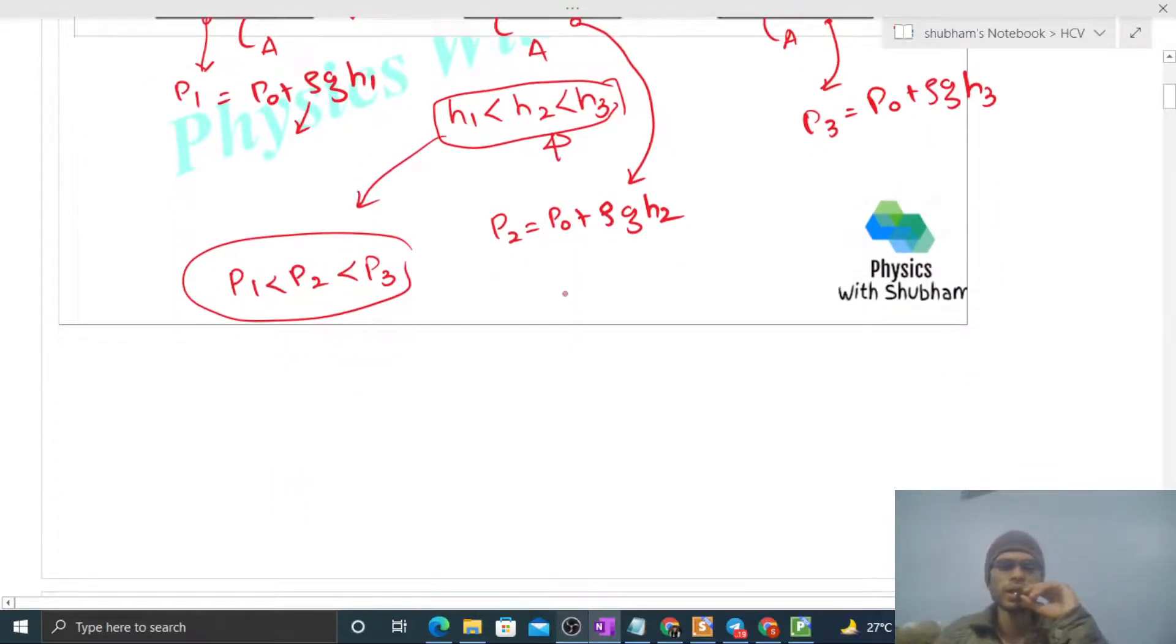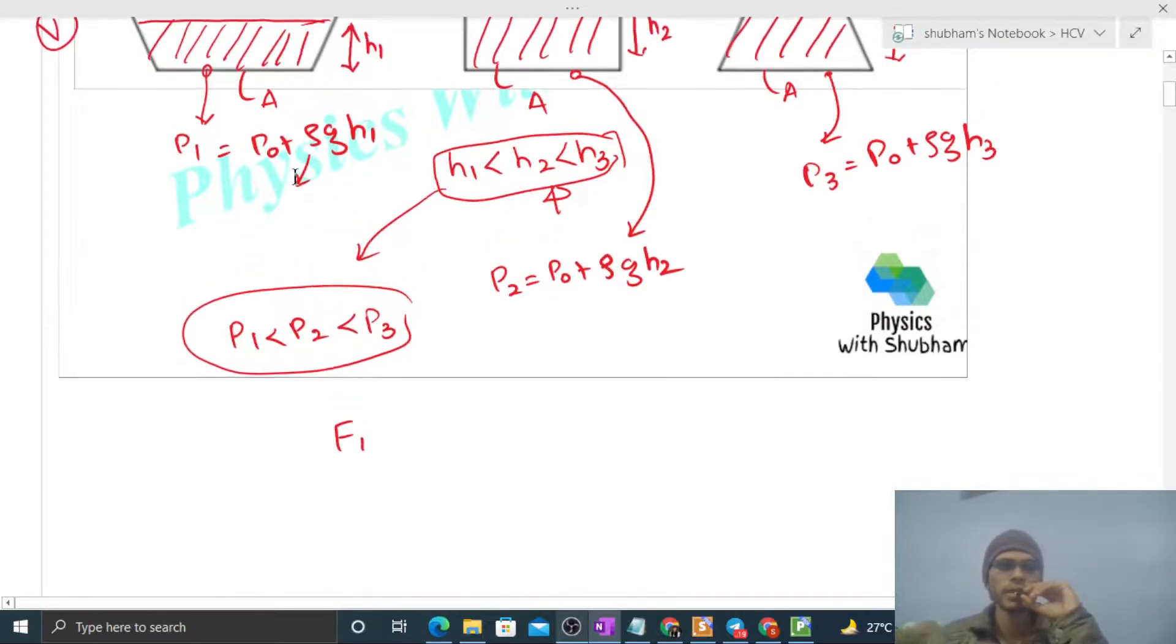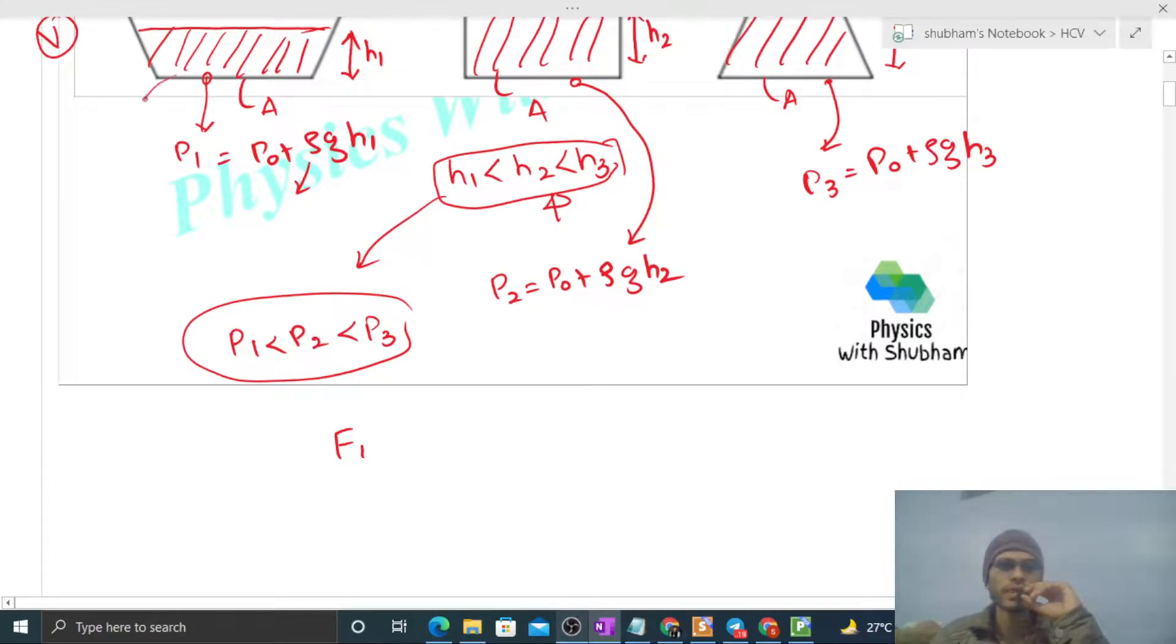Now you can see what is force F1? F1 is the force by the liquid at the base area of vessel 1. The liquid applies force F1 at vessel 1's base area, that is nothing but p1 times area. Similarly, F2 for vessel 2 will be p2 times area.